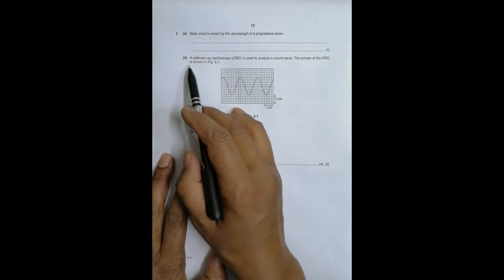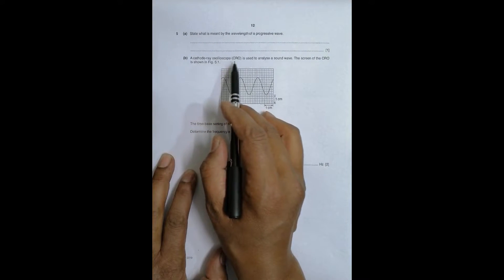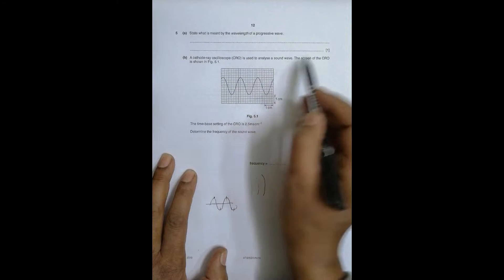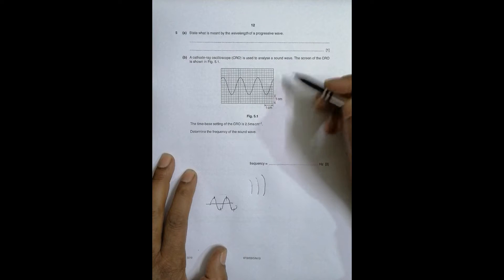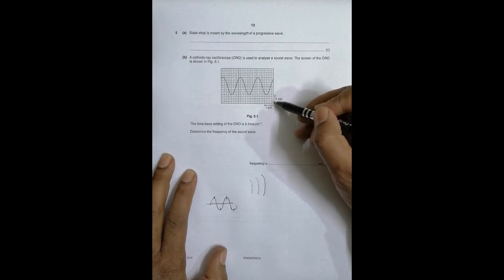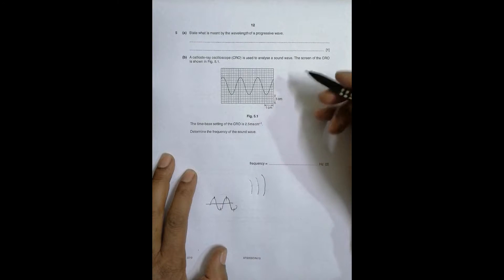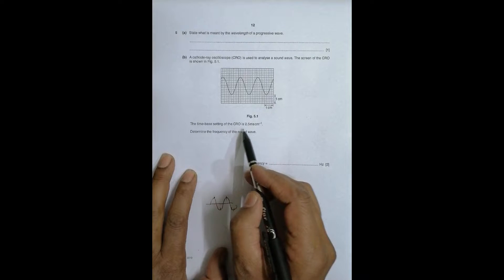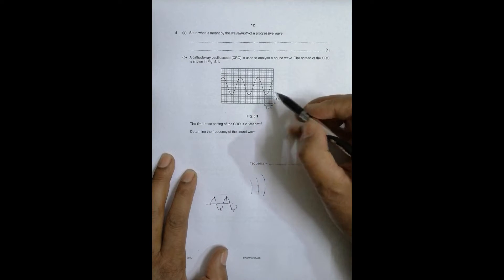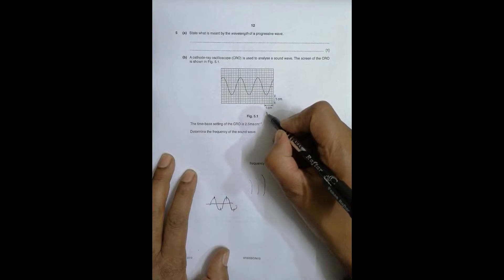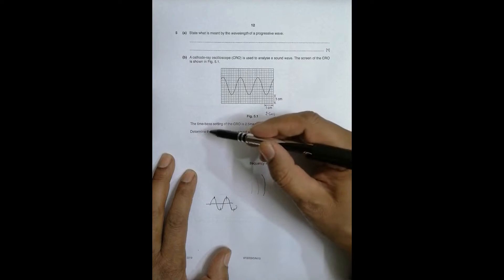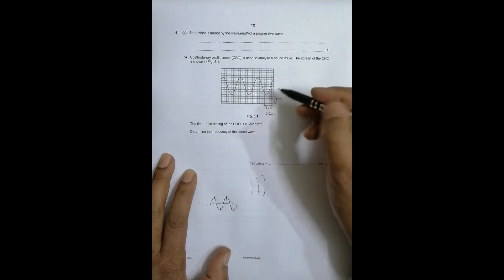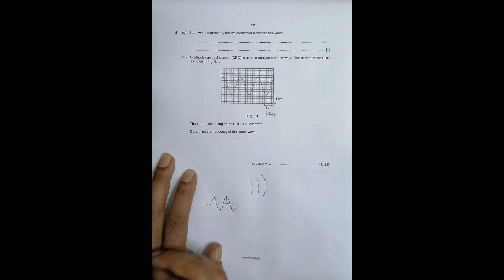Part (b): a cathode ray oscilloscope (CRO) is used to analyze a sound wave. The screen of the CRO is shown in Figure 5.1 — five divisions equal one centimeter both horizontally and vertically. The time setting of the CRO is 2.5 milliseconds per centimeter, so one centimeter equals 2.5 milliseconds. With this time setting we have to determine the frequency of the sound wave.